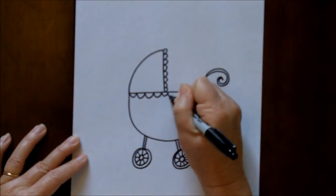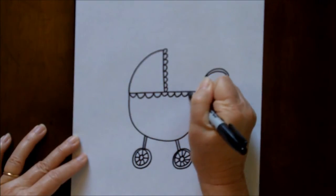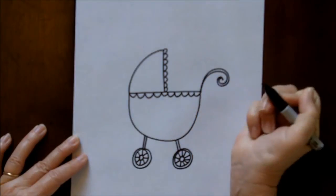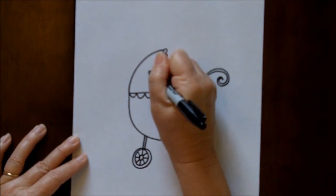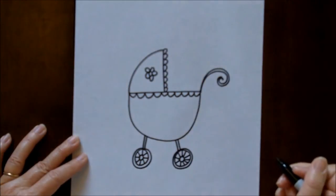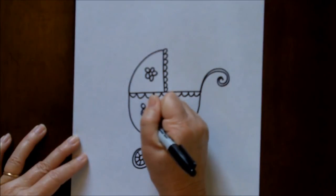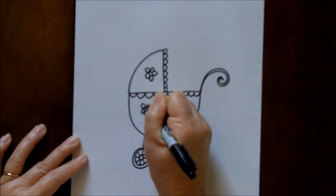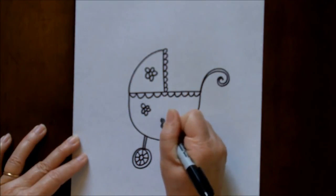This part you can just decorate the carriage any way that you like. You can put daisies, you can put dots, circles, swirls—that would be cute. Any way that you would like to decorate it, just use your imagination.